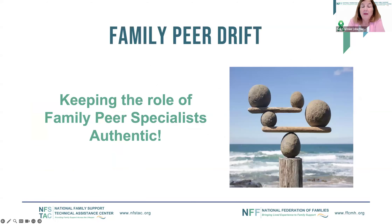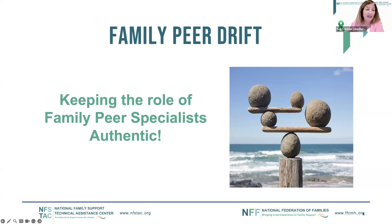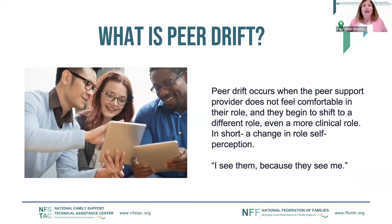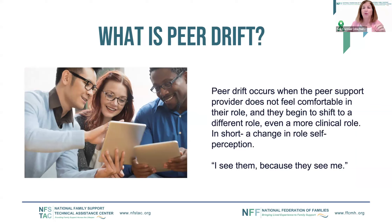So what is family peer drift? Most of you were very close in your answers, and you have a right to feel some frustration, because we really do need to keep the role of family peer specialist authentic. The role of peer specialist is now an evidence-based practice, and family peers in any evidence-based practice should be kept pure. If we're not authentic to the task and to the role, we will not see the results we know we can achieve with the family peer specialist. Peer drift occurs when the peer support provider doesn't feel comfortable in their role and begins to shift to a different—even more clinical—role: in short, a change in role self-perception.